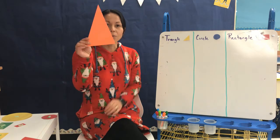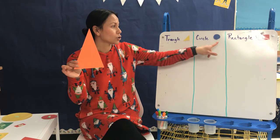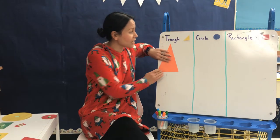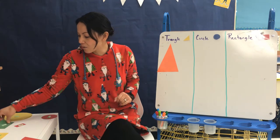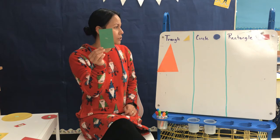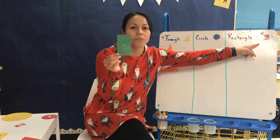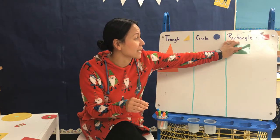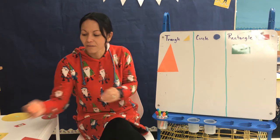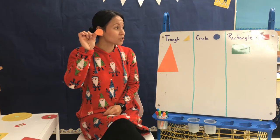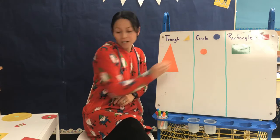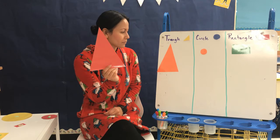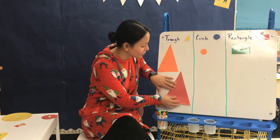So where would this one go? Would it go in the triangle, circle, or rectangle? That's right, it's the triangle. How about this one? Where would I put it in my sorting — in the triangle, circle, or rectangle? That's right, it's a rectangle. How about this one? It's a circle, so we're going to sort it with the circles.